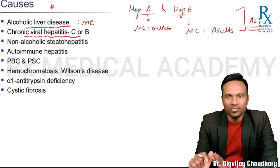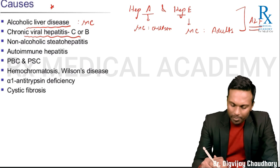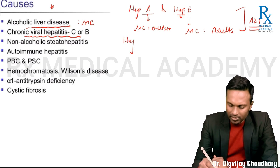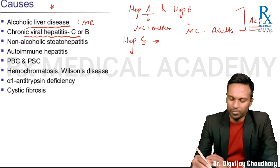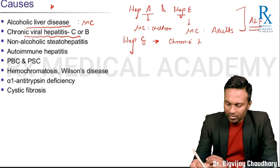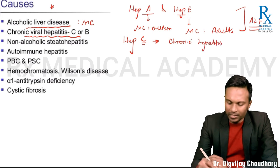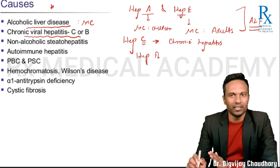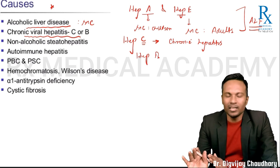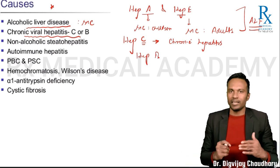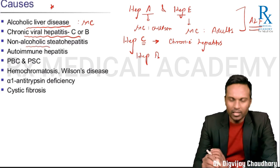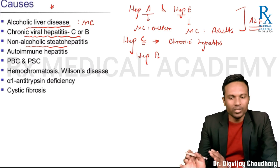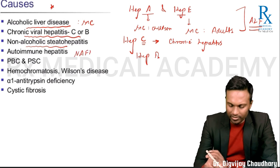Hepatitis B can cause both acute liver disease and chronic hepatitis. Hepatitis C virus has maximum chances of developing chronic hepatitis, but the overall incidence of hepatitis B is far more compared to hepatitis C. So in general, viral hepatitis due to hepatitis B is seen in more patients.